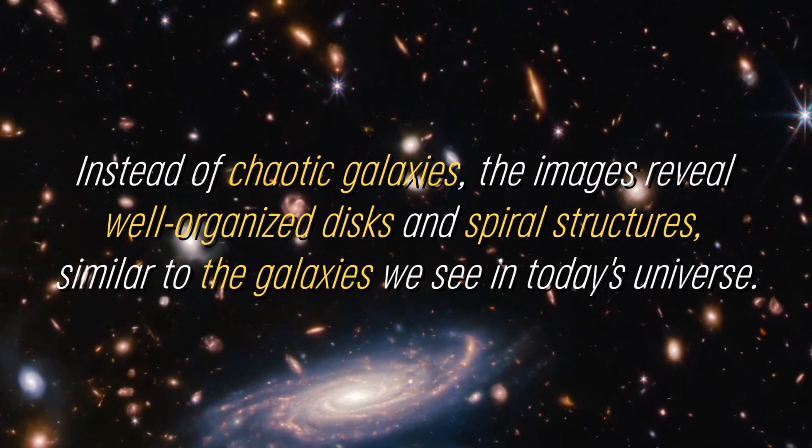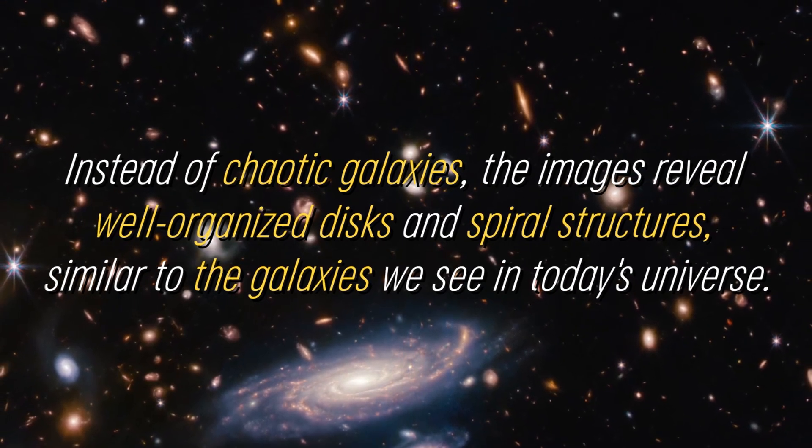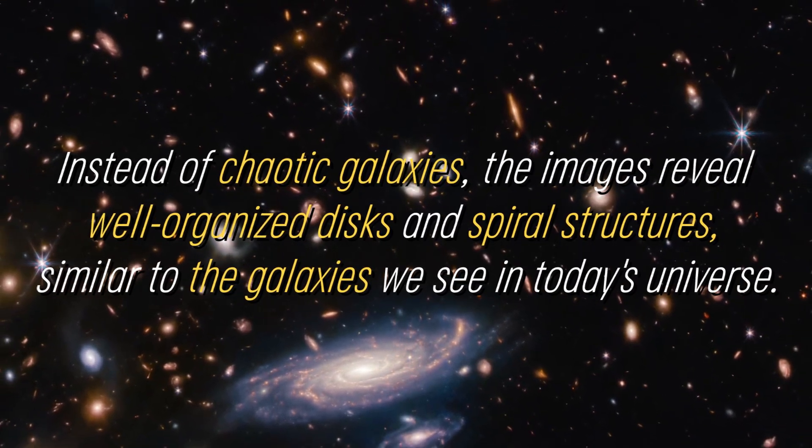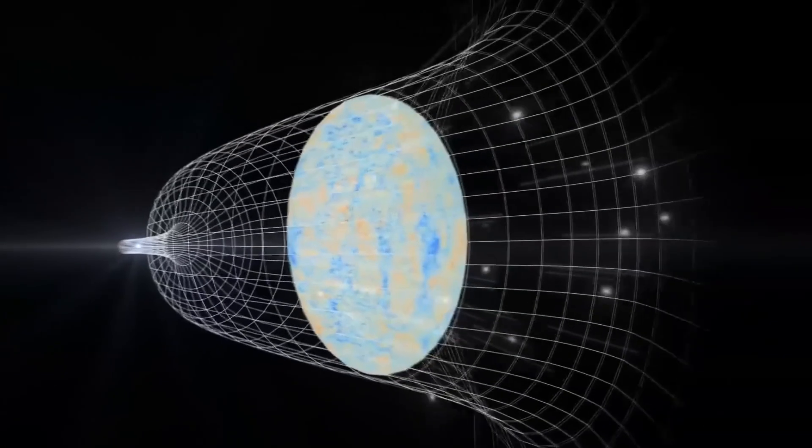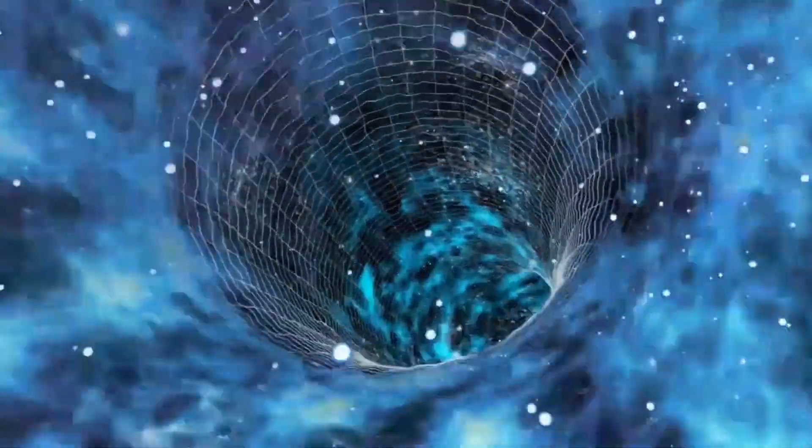Instead of chaotic galaxies, the images reveal well-organized disks and spiral structures, similar to the galaxies we see in today's universe. This unexpected observation challenges the idea that mergers are a common process in galaxy evolution.